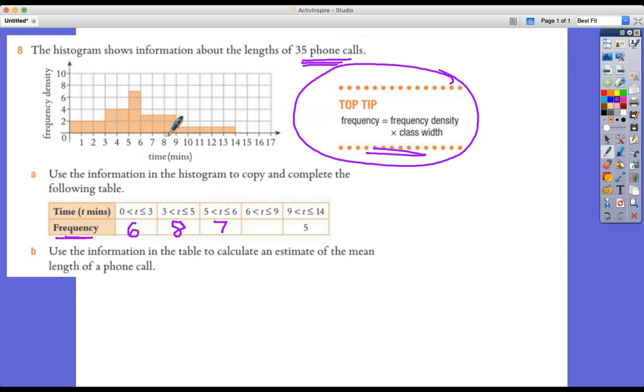6 to 9, we've got a class width of 3 and it's going up to 3. So 3 multiplied by 3 is 9.